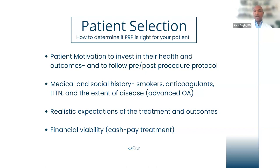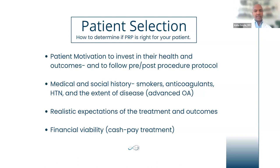When you're first getting started, stick to mild to moderate disease and find your healthier, motivated patients. As Dr. Chen says, this stuff isn't pixie dust — it's important to set realistic expectations. This isn't going to magically regrow cartilage, but it can have a profound anti-inflammatory effect and may preserve the cartilage that's there. The financial viability of the patient is also incredibly important. If this is something patients have to save up for or it will strap them financially, they may not be the best people to present these modalities to.